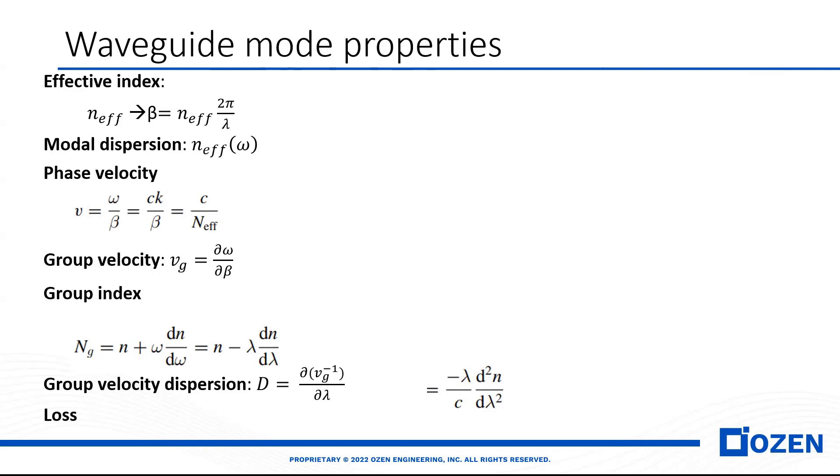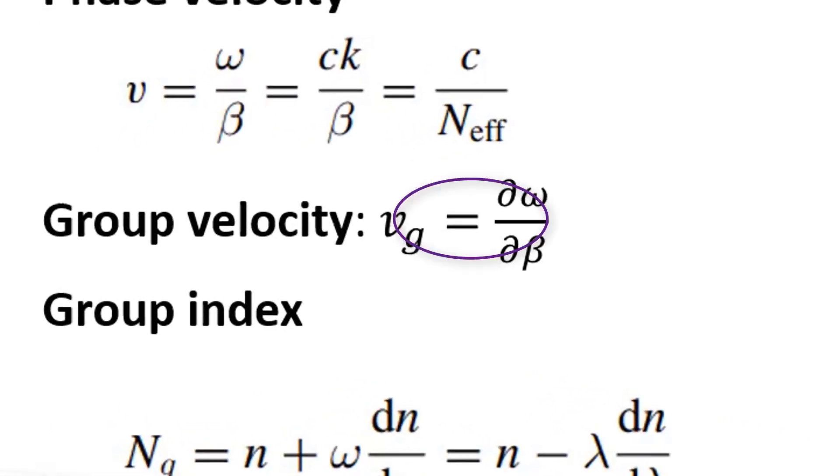In that case, the phase velocity can be defined easily because phase velocity is the velocity of the wave that propagates with specific wavelengths. But if wavelengths experience different effective indices, then when we want to calculate the velocity of two, three, four wavelengths, we need to have a group velocity.